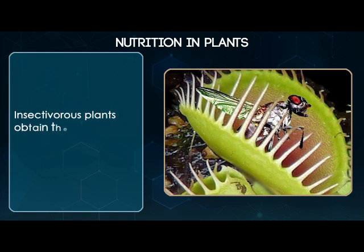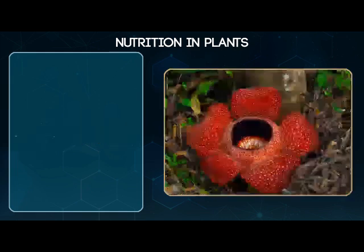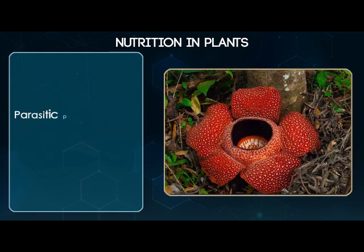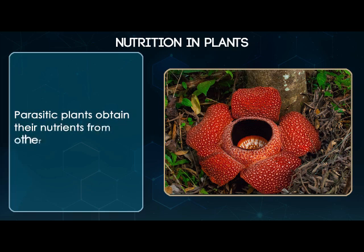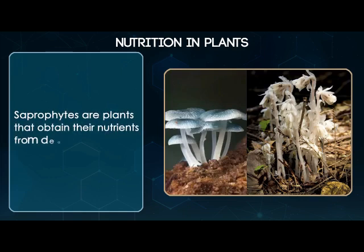Insectivorous plants obtain their nutrients by trapping and digesting insects. Parasitic plants obtain their nutrients from other plants. Saprophytes are plants that obtain their nutrients from dead and decaying organic matter.